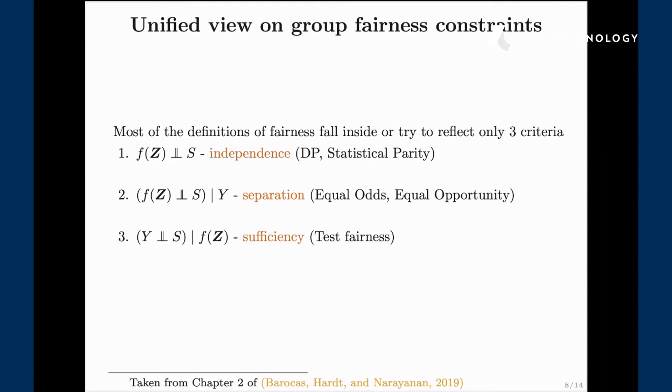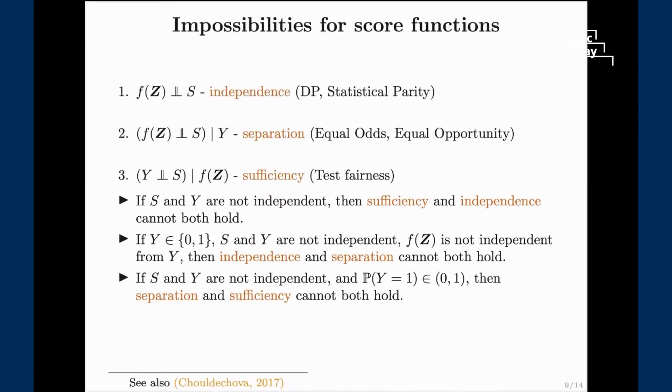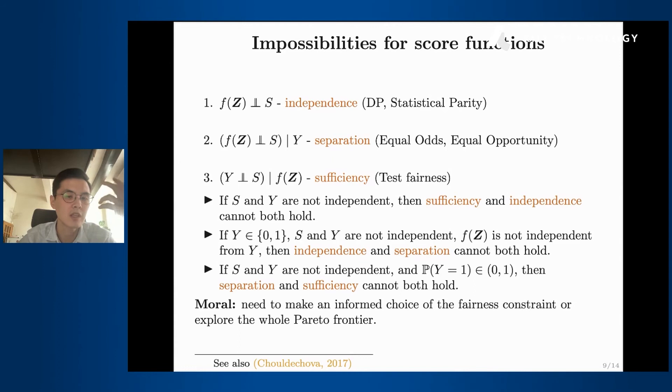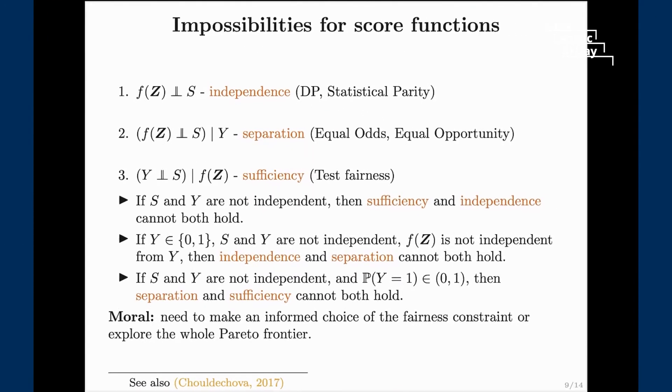Okay, so we have these three definitions and the question is do we choose one, do we choose two, do we choose three? The first result that people talk about is the impossibilities. Essentially it says that unless your distribution is very specific you cannot satisfy any two of them. You cannot satisfy independence and separation, you cannot satisfy separation and sufficiency, sufficiency and independence. You cannot satisfy any two. The moral of that is that given your application you probably should make a really informed choice of what kind of fairness criteria you want to enforce, because you cannot have any two of them.